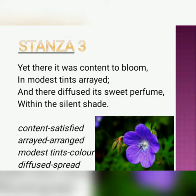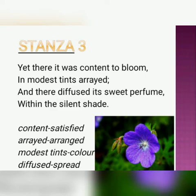This is our third stanza. 'Yet there it was content to bloom in modest tints arrayed, and there diffused its sweet perfume, within the silent shade.' It was satisfied to bloom in an ordinary place. 'In modest tints arrayed' means a shade of humbleness is arranged. 'Diffused' means spread — it is spreading its sweet perfume within the silent shade. Although it is blooming in a very ordinary bed of grass, not in a beautiful garden, it is spreading its sweet fragrance with all its modesty and humbleness.